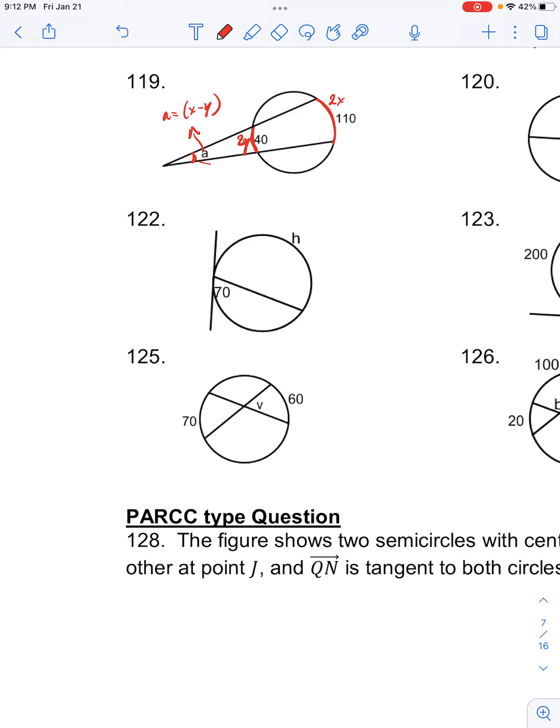So first we need to find x. If 2x equals 110, then x would be 55. And then over here, if 2y equals 40, then y would equal 20.